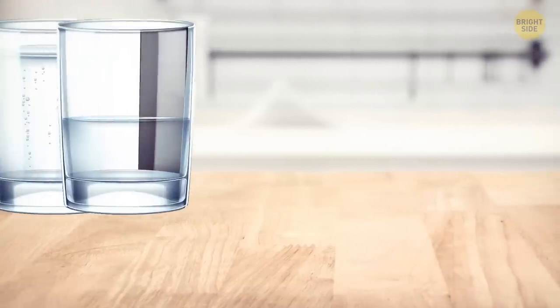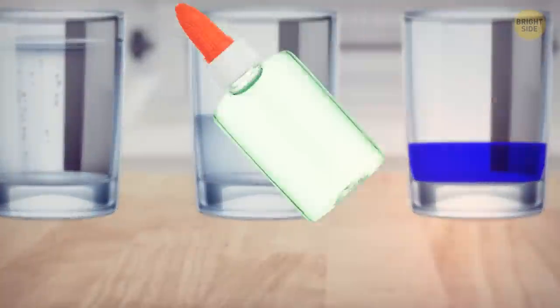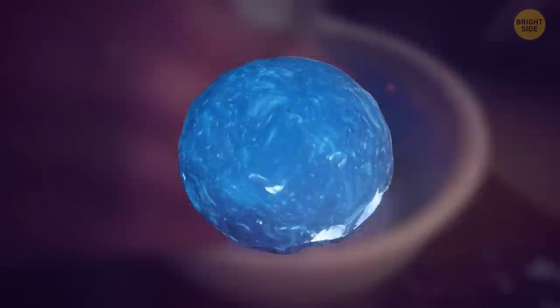All you need is 1.5 cups of warm water, 1.25 cup of laundry booster, and 5 ounces of white school glue. Mix all the ingredients in a bowl, then knead it into a ball until you have the ultimate cleaning device.